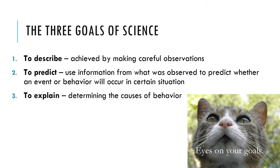The second goal of science is to predict. Once we've observed with some regularity that two behaviors or events are systematically related to one another, we can use that information to predict whether an event or behavior will occur in a certain situation. Once I know that most medical marijuana patients use marijuana to treat pain, I can use that information to predict that an individual who uses medical marijuana likely experiences pain. Of course, my predictions will not be 100% accurate, but if the relationship between medical marijuana use and pain is strong, then my predictions will have a greater than chance accuracy.